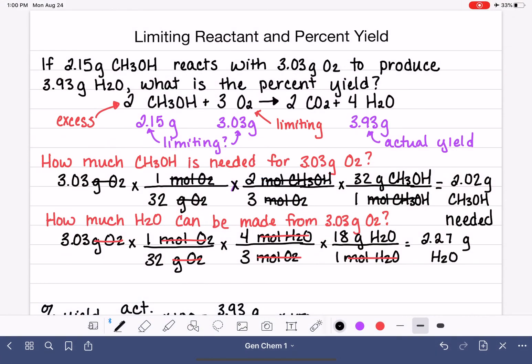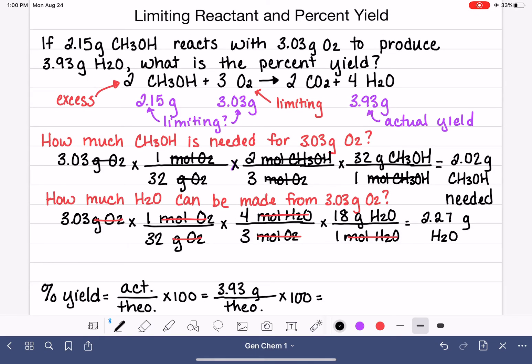And it looks like our number here is 2.27 grams of H2O. So let's get rid of the calculator again, and let's see what's going on. What we have calculated here is the theoretical yield. So this is the theoretical or the maximum amount of H2O that can be made from our limiting reactant. And we're ready to plug this number into our percent yield calculation.